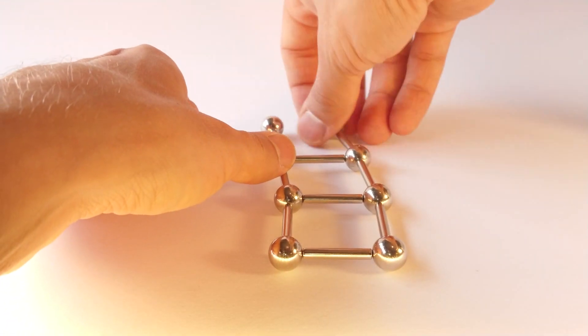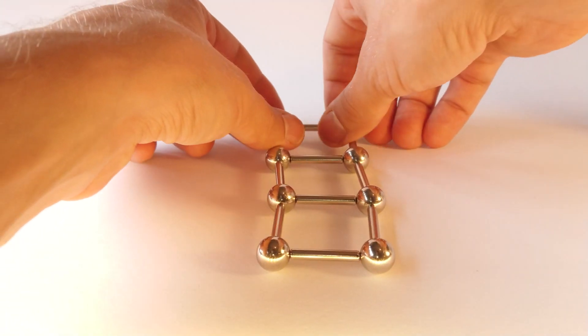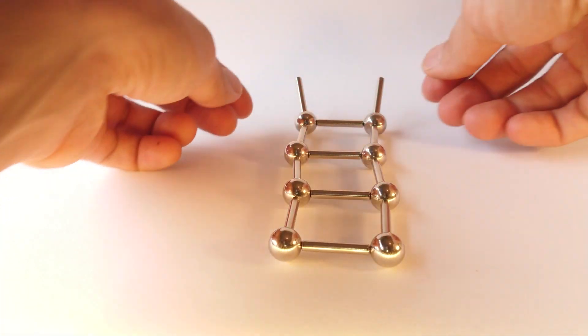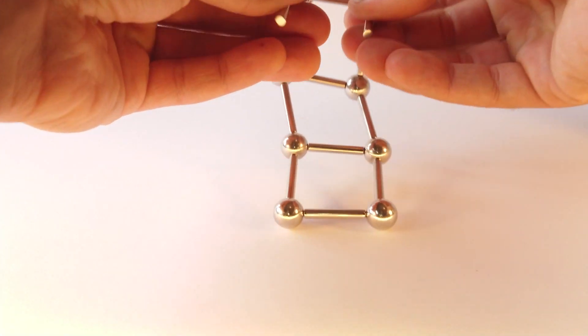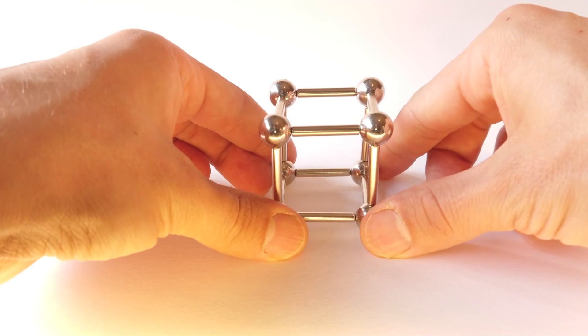The cube or hexahedron is a three-dimensional solid object bounded by six square faces with three meeting at each corner.